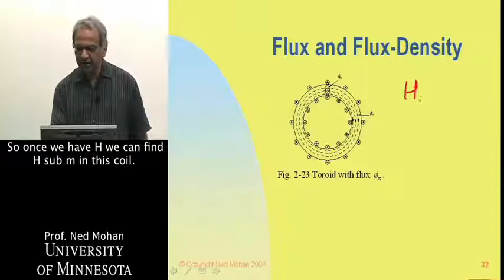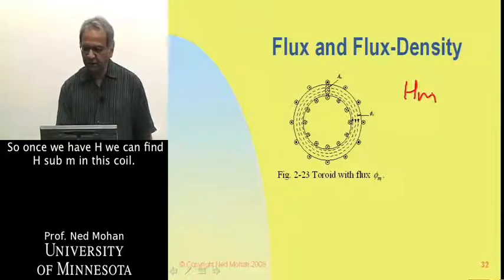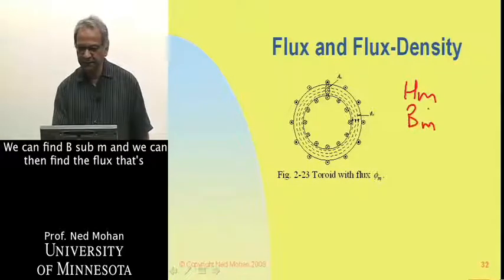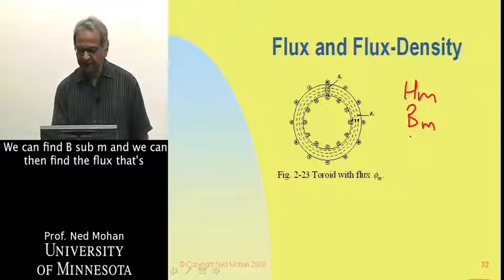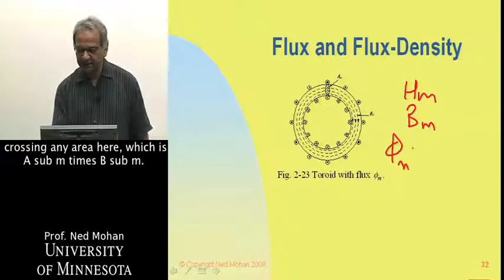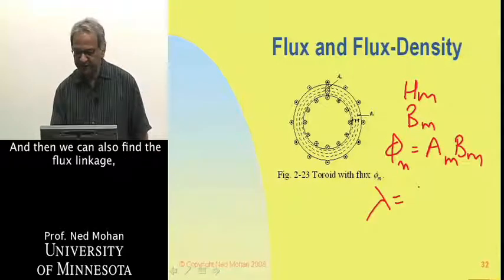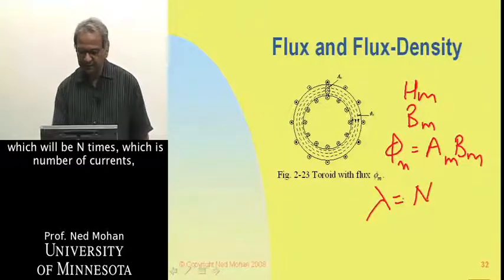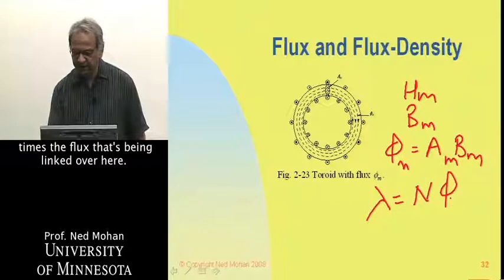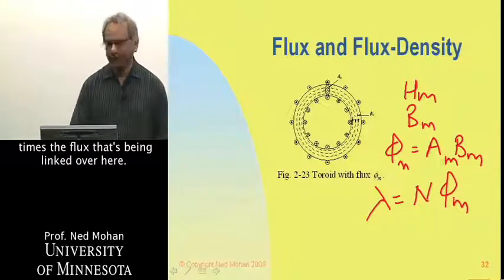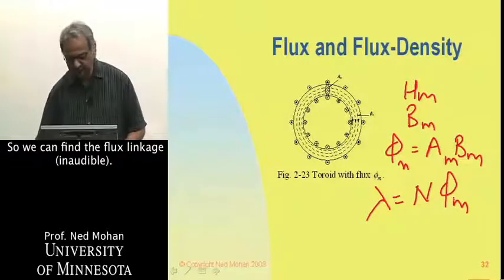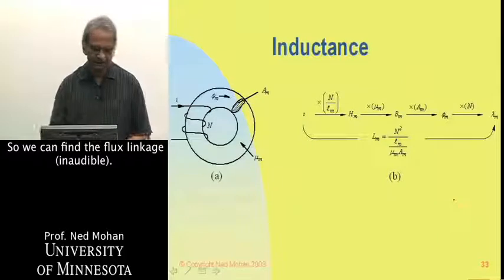Once we have H, we can find H sub m in the core and then find B sub m. We can find the flux crossing the cross-sectional area, which is A sub m times B sub m. And then we can find the flux linkage, which is N — the number of turns — times the flux being linked.